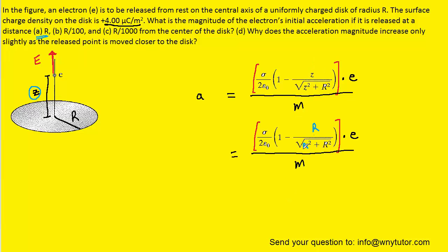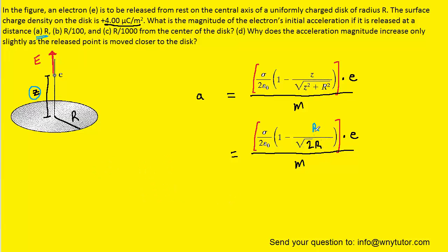Algebraically cleaning this up: we have R squared plus R squared under the square root, which becomes 2R squared. The radical of 2R squared can be written as radical 2 times radical R squared, and radical R squared is just R, so that becomes radical 2 times R. We can then see that the R in the numerator cancels with the R in the denominator.